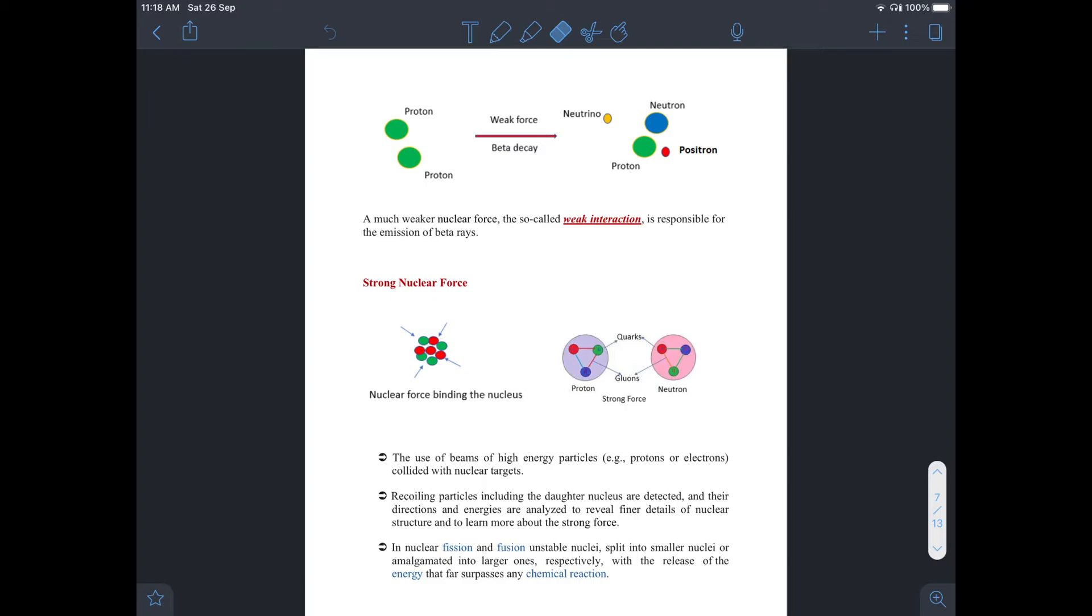A much weaker force called weak interaction is responsible for the emission of beta rays. Proton gets converted into a neutron with the emission of positron and neutrino. This beta decay is also responsible for the formation of complex nuclei.